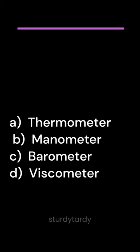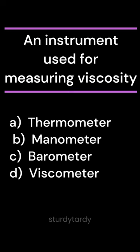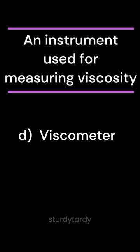Answer: B. Cryometer. An instrument used for measuring viscosity. A. Thermometer. B. Manometer. C. Barometer. D. Viscometer. Answer: D. Viscometer.